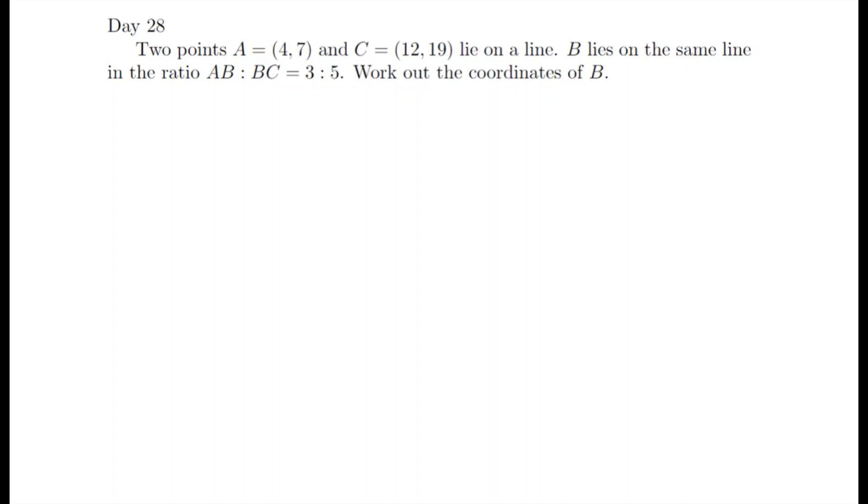So today's question is two points A, which is 4, 7, and C, which is 12, 19, lie on a line. B lies on the same line, but in the ratio of AB to BC is 3 to 5. Work out the coordinates of B.